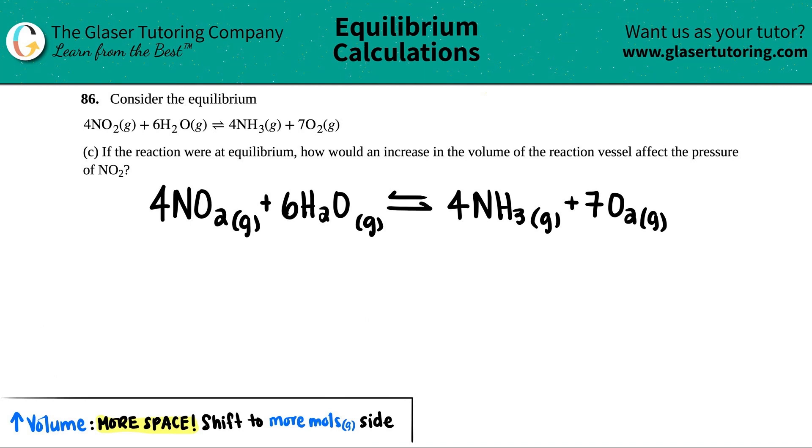Number 86. Consider the equilibrium, which is this balanced equation here. I just rewrote it a little bit bigger. So we have 4 NO2 gas plus 6 H2O gas comes to equilibrium with 4 NH3 gas plus 7 O2 gas.